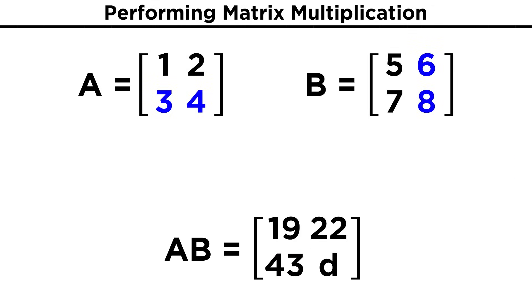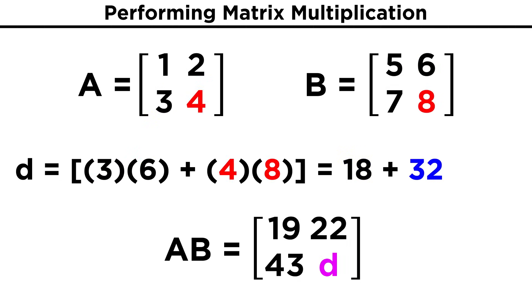And lastly, we shift to the second column again. Three times six is eighteen, four times eight is thirty-two, eighteen plus thirty-two is fifty, and that will go in the last entry here.